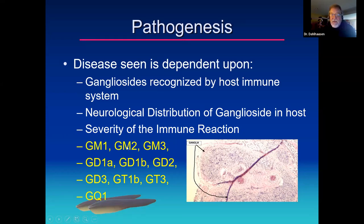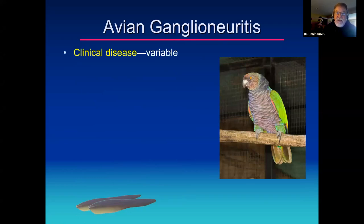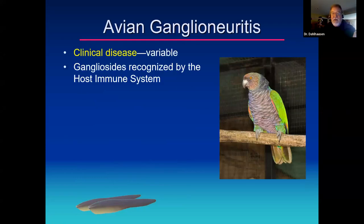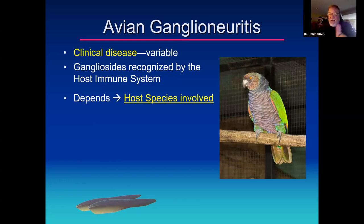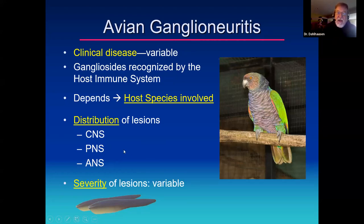The common gangliosides tested are GM1, GM2, and GT1B. The distribution of gangliosides varies among species — perhaps macaws have a high concentration of GM1 in the digestive tract, while in cockatoos it may be in the lower brainstem. That's why we see differences in disease presentation. The lesions can be in the central, peripheral, or autonomic nervous system. If they're minor, we see mild disease; if severe and affecting an important part of the bird's body, we see more severe disease.